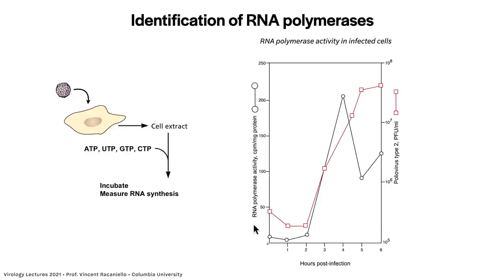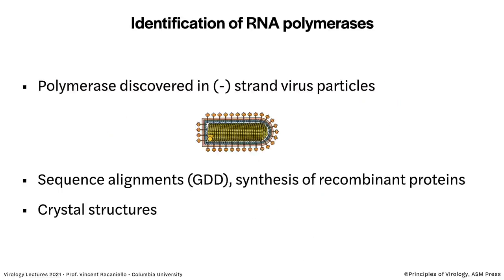Looking at hours after infection, on the left is RNA polymerase activity — the amount of radioactivity incorporated into RNA — and on the right is virus titer in PFU per ml. This is an experiment with poliovirus. Between two and three hours after infection, you start to see RNA being made, and at the same time virus is being made. That was the first evidence of an activity in cells that can make RNA. In uninfected cells, there's no incorporation because cells don't make RNA from RNA.